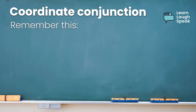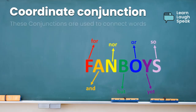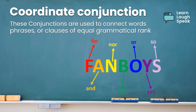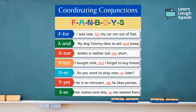With coordinating conjunctions, remember this famous acronym: FANBOYS. Conjunctions are used to connect words, phrases, or clauses of equal grammatical rank. The best way to remember the seven coordinating conjunctions is by using this little bit odd but easy-to-use acronym called FANBOYS.